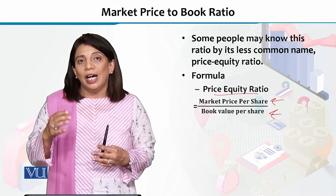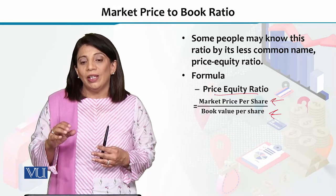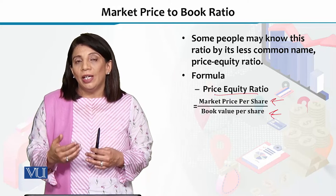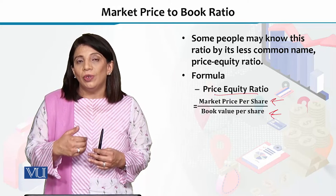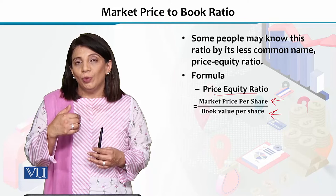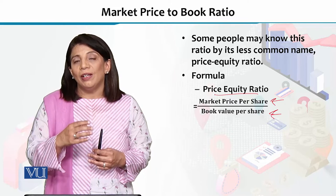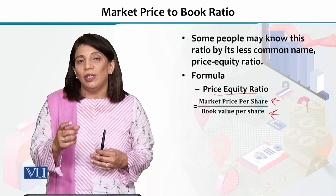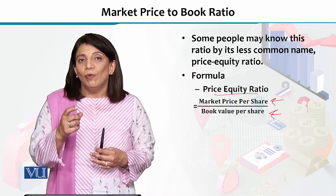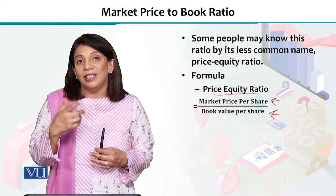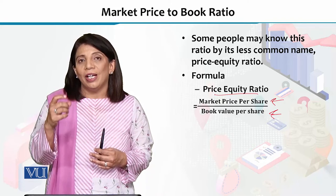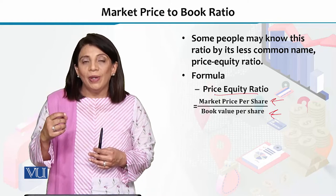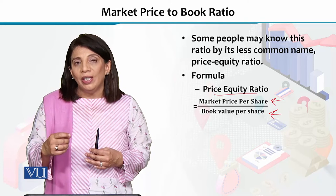If the two values are equal to one another, then the market price to book ratio will become one. If the market price is less than the book value, the value of the actual stock is higher and the market price is smaller, so naturally the market price to book ratio will be smaller than one.